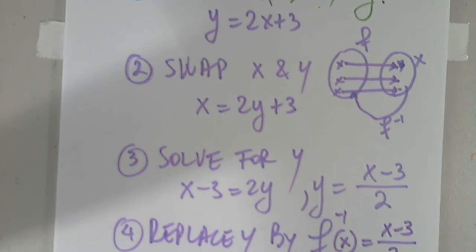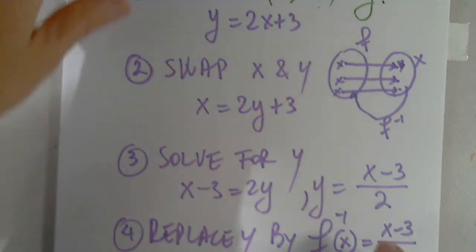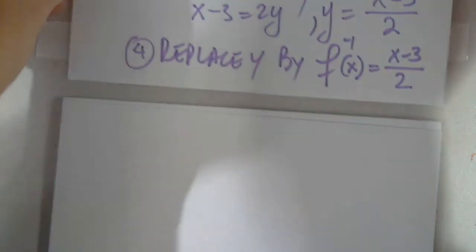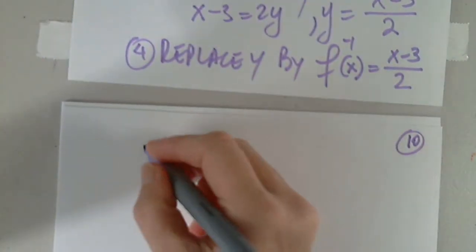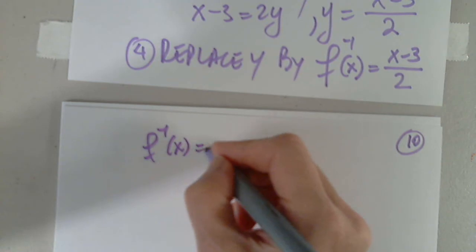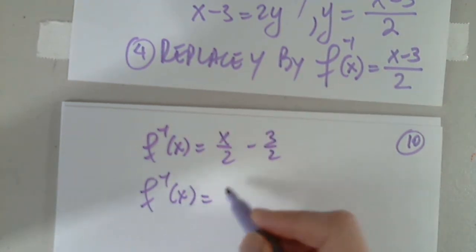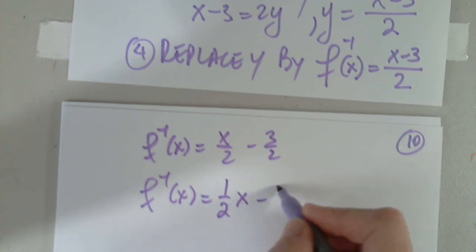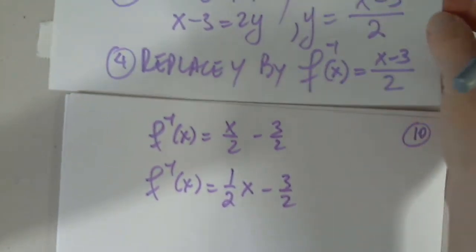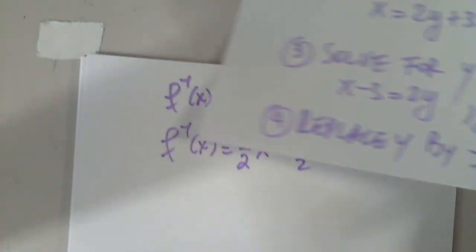Could it still be written as the sign of f inverse equals x over 2 minus 3 over 2? Yes, yes, you can, absolutely. So you can write it as f inverse, even as x over 2 minus 3 over 2. Or you can write it as 1 over 2 times x minus 3 over 2. All are acceptable. Very good.